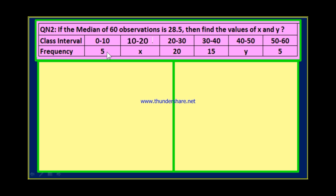The class 0 to 10 has frequency 5. Class 10 to 20 has frequency x. Class 20 to 30 has frequency 20. Class 30 to 40 has frequency 15. Class 40 to 50 has frequency y. And class 50 to 60 has frequency 5. If you observe, here two frequencies are missing: x for the 10 to 20 class and y for the 40 to 50 class. We have to find the values of both x and y.